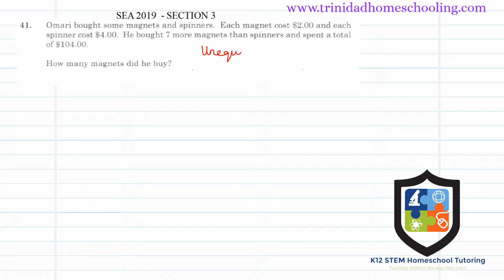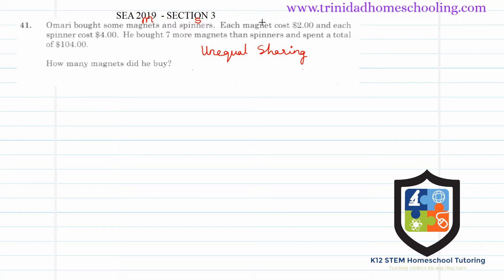This falls under the topic of unequal sharing, which is part of my collection of unequal sharing solution videos. As usual, we start by giving our items some letters: M for magnets and S for spinners, so I don't waste time writing the full words repeatedly. Each magnet costs $2, each spinner costs $4, he bought seven more magnets than spinners, and spent a total of $104.